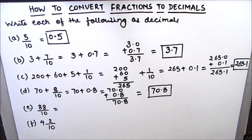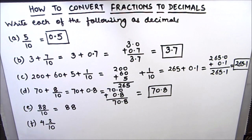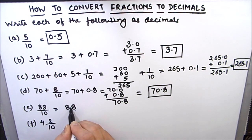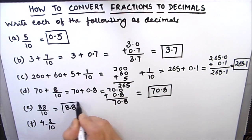Now 88 divided by 10. We know that when we divide by 10 we will put the decimal point to the left of one digit from the right. So we have two digits in the numerator: 88. First we will write the digits, then we will count the digits from the right. One digit from the right — we will put the decimal point there. So this will be 8.8. This is our final answer.